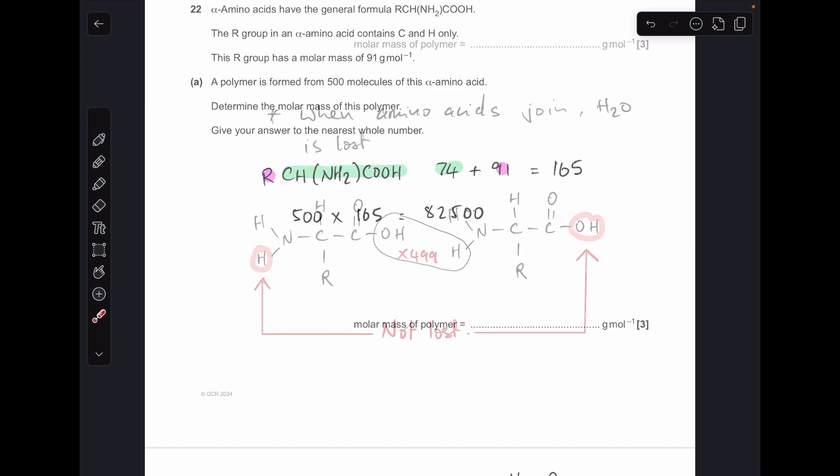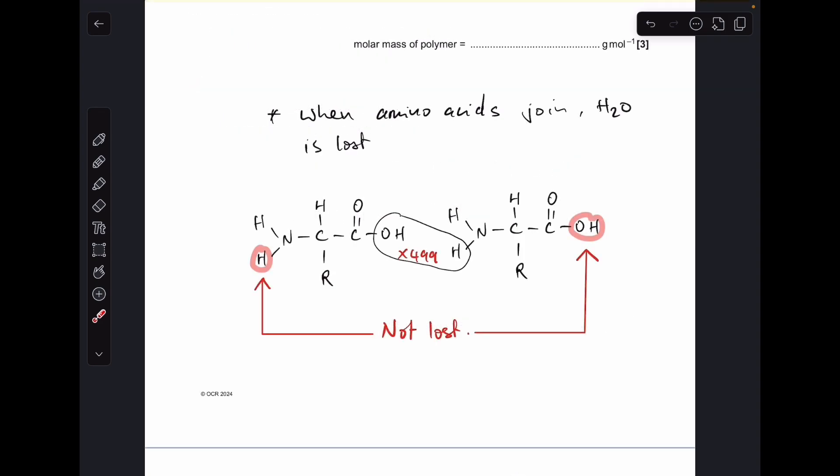Now the tricky bit kicks in. So when the amino acid joins together, we have a condensation reaction, so we lose an H2O molecule to join them together. So we're going to lose the OH from the carboxyl group on one side, and the H from the amino group on the other side.